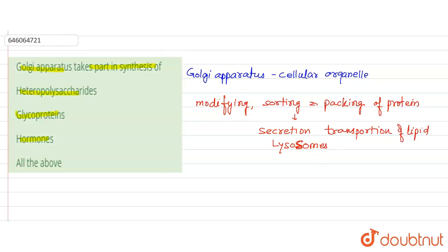The protein and lipids synthesized by the endoplasmic reticulum combine with carbohydrate to form glycoprotein and glycolipid. So this Golgi apparatus is basically responsible for the formation of glycoprotein.